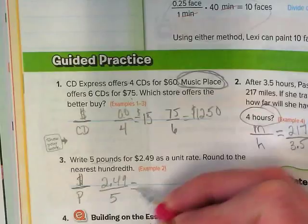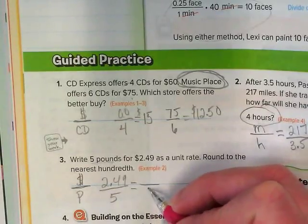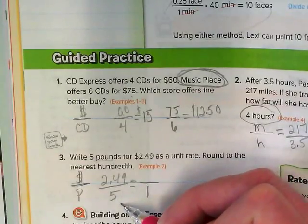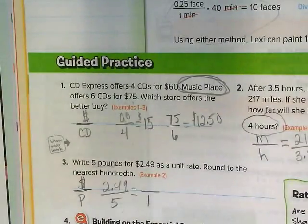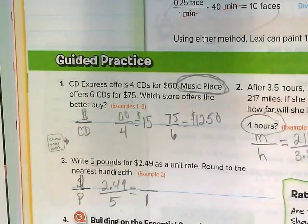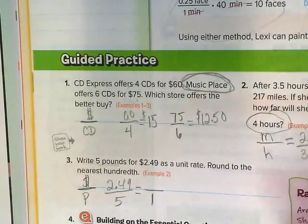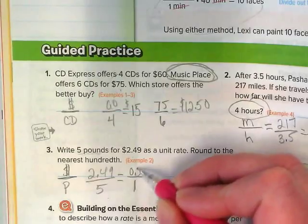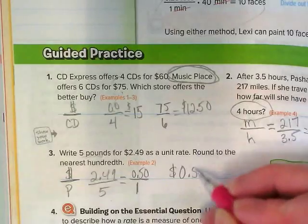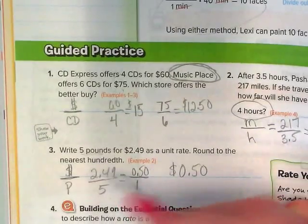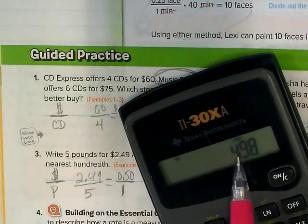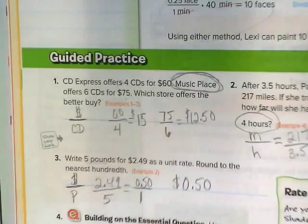As a unit rate, which means I need to get this down to my base being one. How am I going to do that? $2.49 divided by five. If you have a calculator, please do that. Which I would round that up to 50 cents. Because it did say round to the nearest hundredth, and when I look at 0.498, I'm going to round up the eight to the nine, and that's going to get rounded up, so it will be at 50 cents.